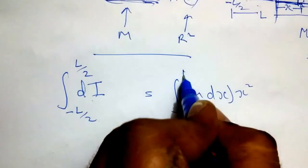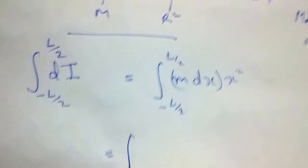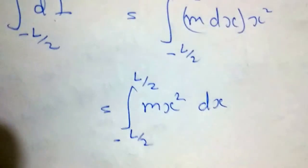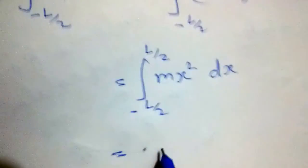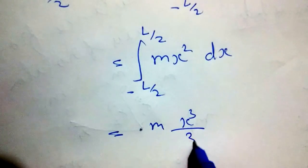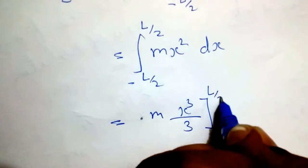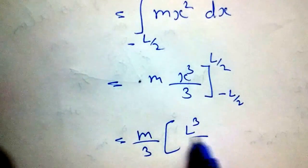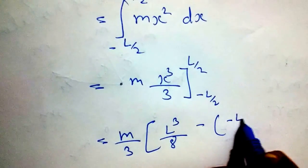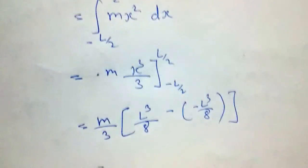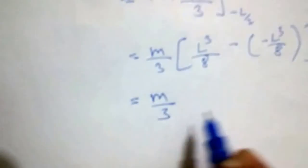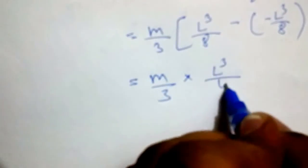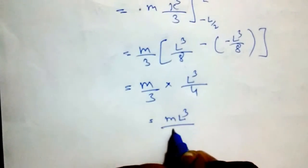Integrating: I = ∫m·x²·dx from −L/2 to L/2. This gives m·[x³/3] evaluated from −L/2 to L/2, which equals m/3 · (L³/8 − (−L³/8)), resulting in m/3 · (L³/4) = mL³/12.